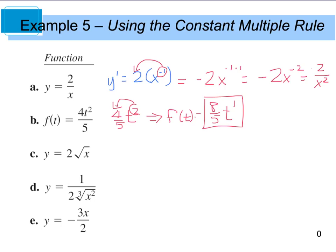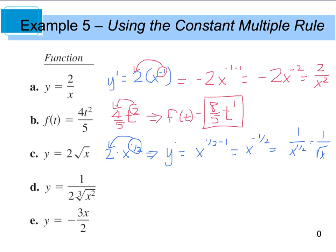For part C, we have 2 times x to the 1 half power. When I find y prime, I take this exponent and multiply it by my 2 — 2 times 1 half is just 1 — giving me x to the 1 half minus 1, which gives me x to the negative 1 half. I can write that as 1 divided by x to the 1 half, or rewrite that as 1 divided by the square root of x. Either one I would accept, but on your AP exam I would just leave it as x to the negative 1 half.